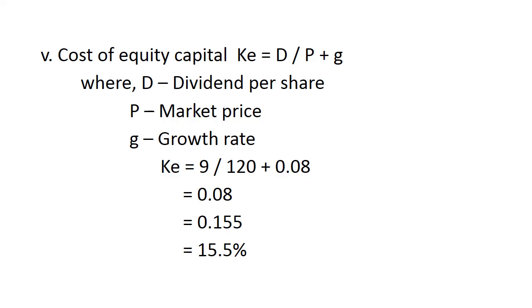And last, they have said the cost of equity has to be calculated. Since they have given us the dividend per share, market price per share, and the growth rate per share, cost of equity becomes dividend per share upon market price per share plus growth rate. Now, this growth rate is in percentage form. That was 8%. Dividend per share was 9 rupees. Market price of the dividend is 120. So 9 upon 120 plus 0.08. This is 8%. So it comes to 0.08.